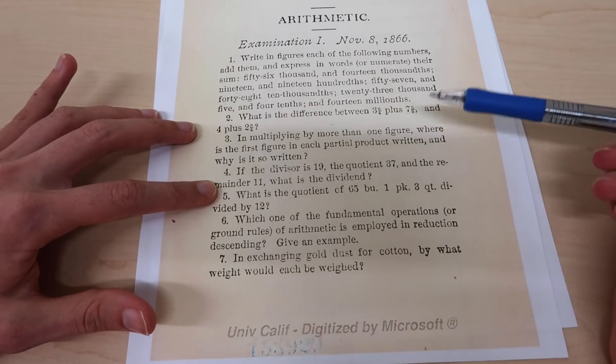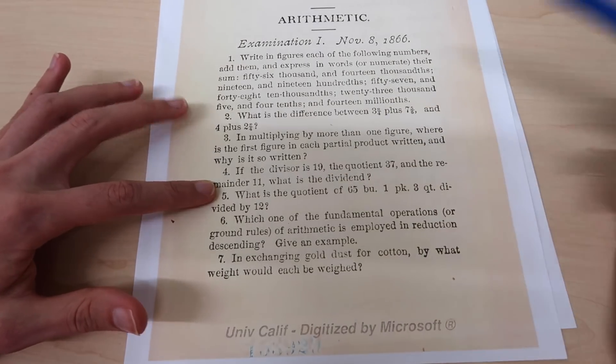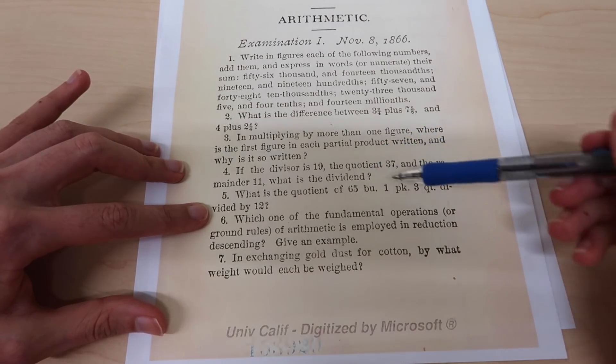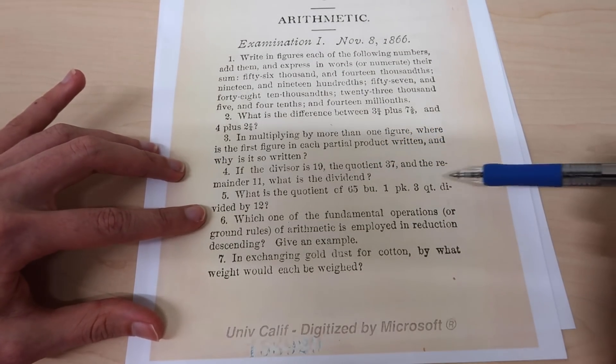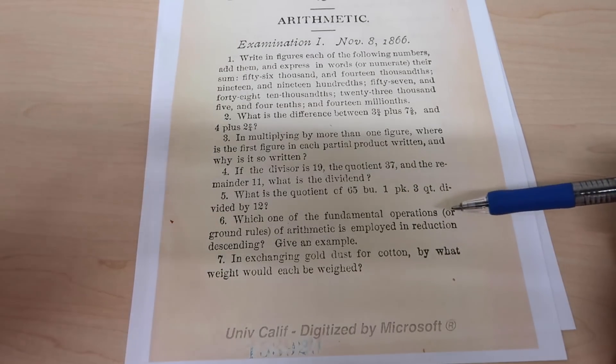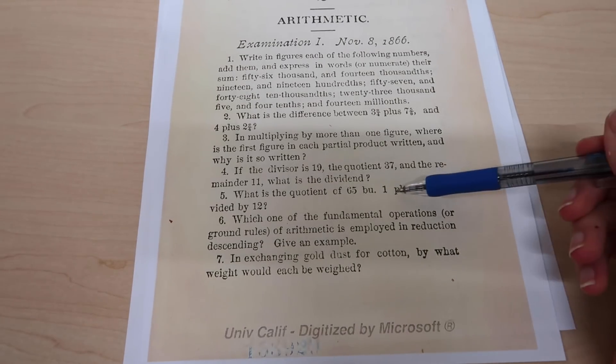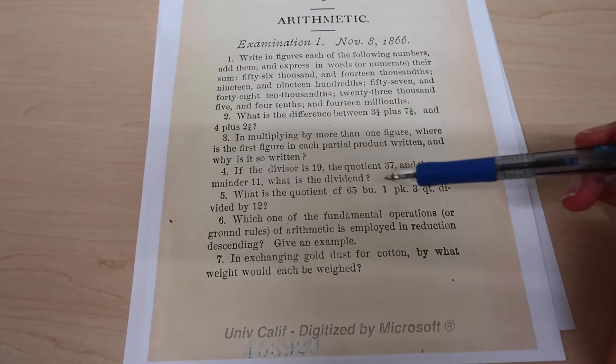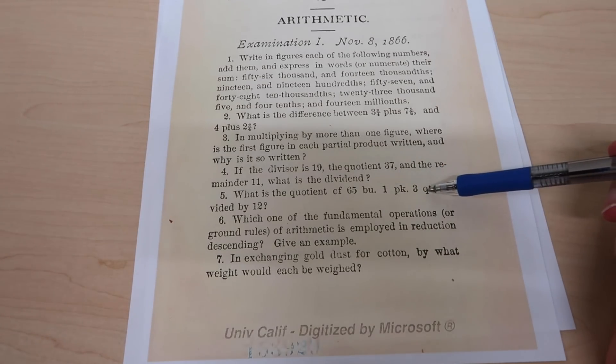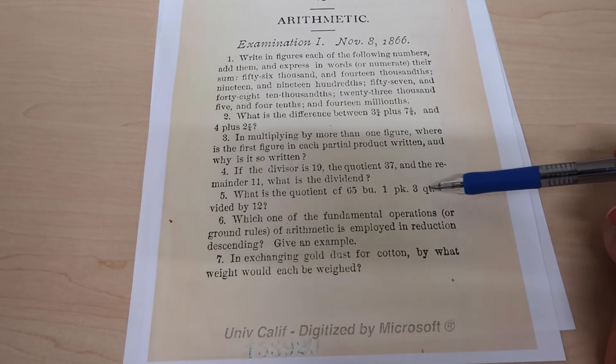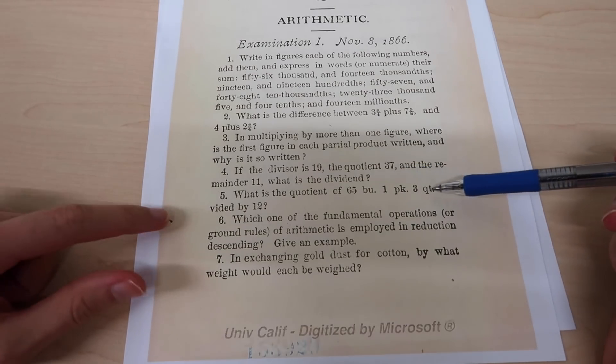Number five: what is the quotient of 65 bu 1 pk and 3 qt divided by 12? So these are a bunch of units that I'm not familiar with. I did a quick google of them and I think it's quart, peck and bushel. I guess you'd have to convert them down to the quart, divide it by 12, and then maybe convert it back into these types of units again.